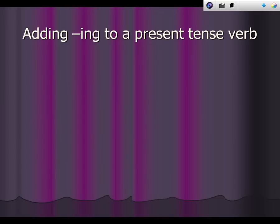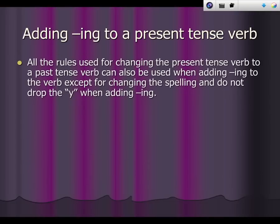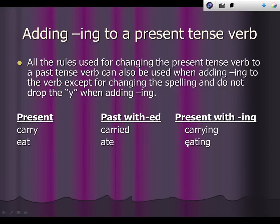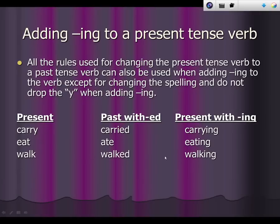Let's talk about adding -ing to a present tense verb. All the rules used for changing the present tense verb to a past tense verb can also be used when adding -ing to the verb, except for changing the spelling — and do not drop the Y when adding -ing. Here are some examples: carry, carried, carrying; eat becomes ate, becomes eating; walk becomes walked, becomes walking; like becomes liked, becomes liking; drop becomes dropped, becomes dropping.